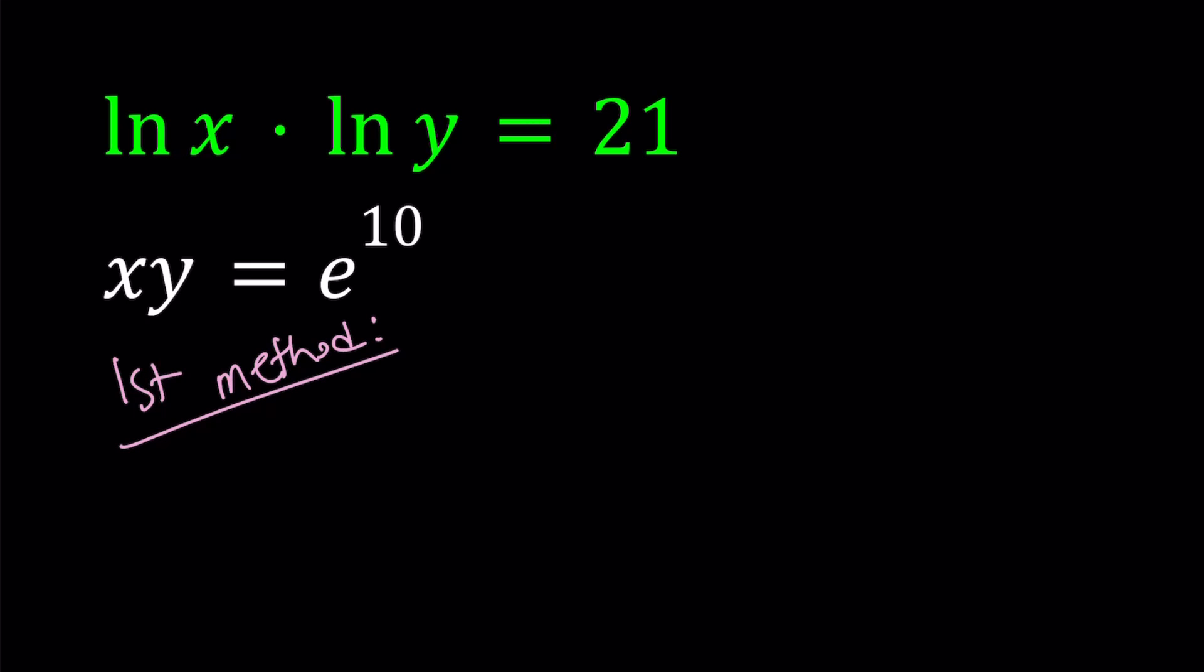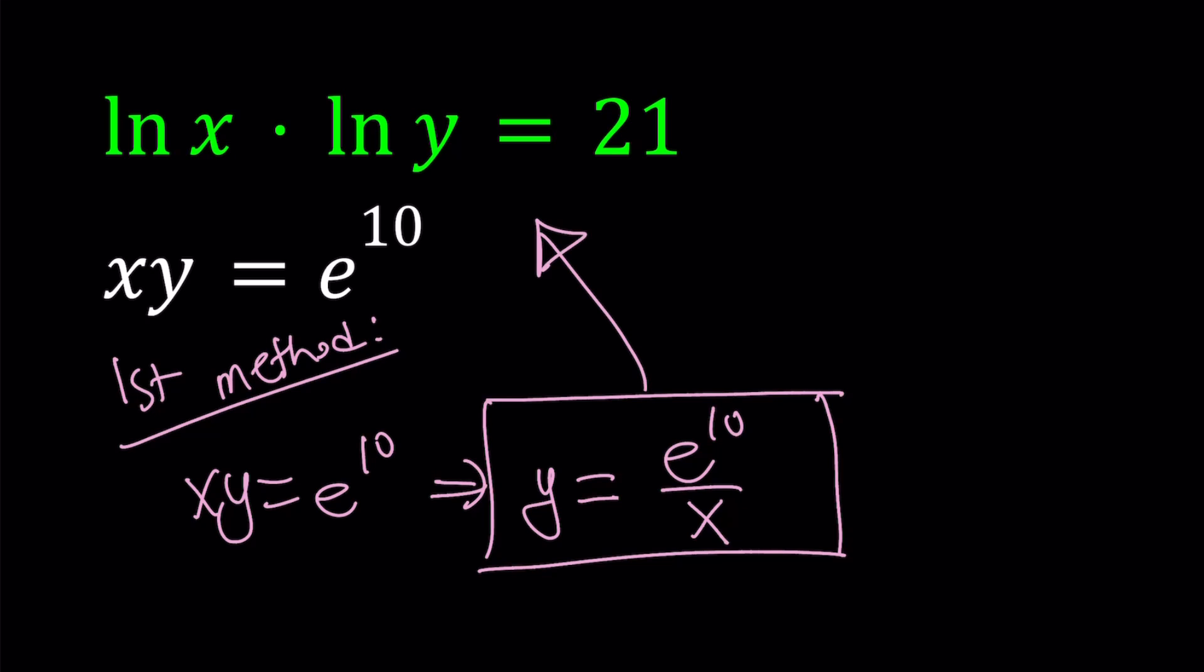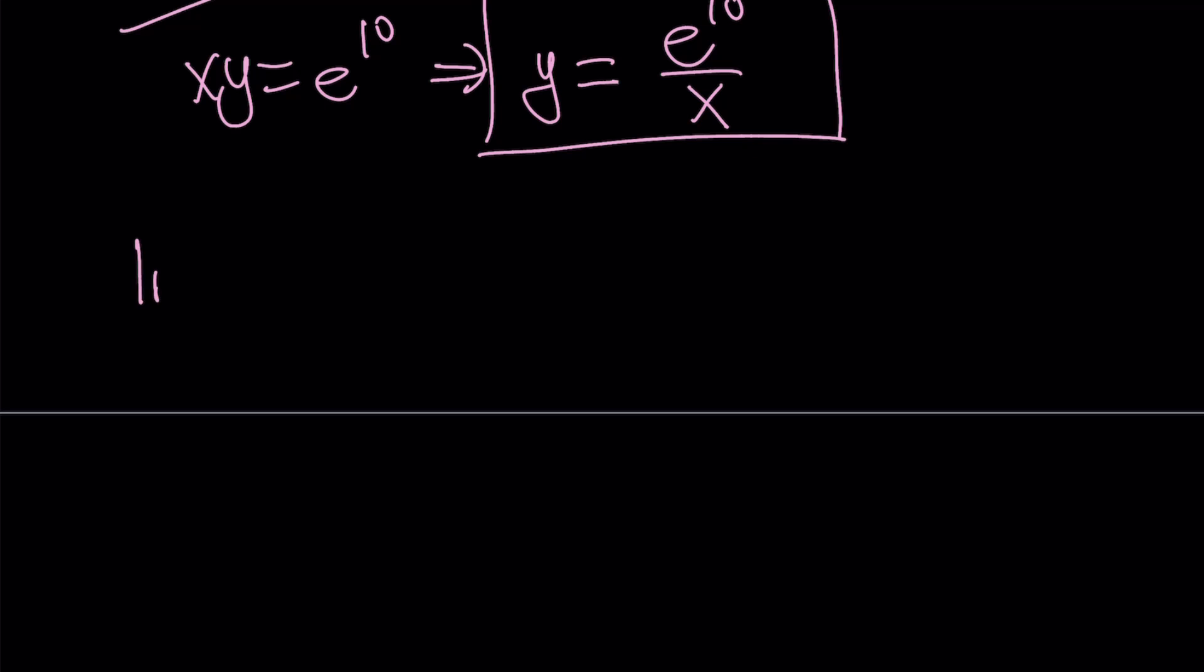So for my first method, I'm just going to use substitution. Since xy is equal to e to the power 10, from here I can write y as e to the power 10 over x. And this is what I would like to substitute into the first equation. We have ln x times ln y equals 21. Now we're going to replace y with e to the power 10 over x. And this is going to give us an equation in a single variable, which is x, and then we can solve it.